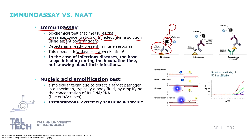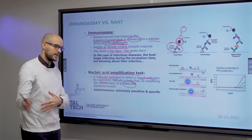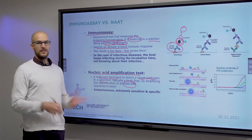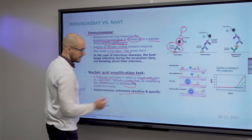Nucleic acid amplification. By nucleic acid, you mean both DNA and RNA — they are characteristic of the organism itself, the parasite itself. It is a molecular technique that can detect a target pathogen in a specimen, typically a bodily fluid, by amplifying the concentration of its nucleic acid. This is the gold standard currently for detecting living organisms. It is used not just in diagnostics, but also in the food industry to detect fakes, for instance. It's fast and very sensitive and very specific.